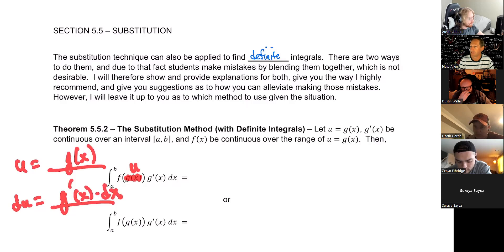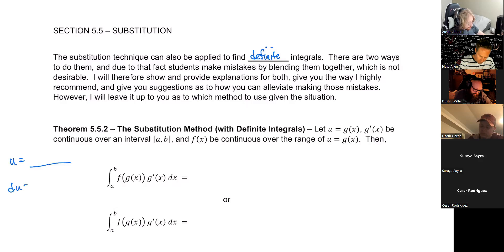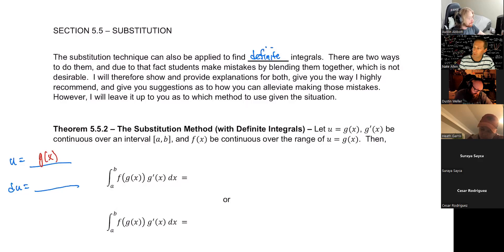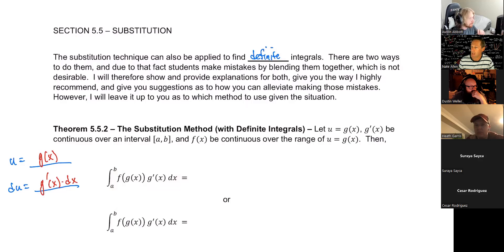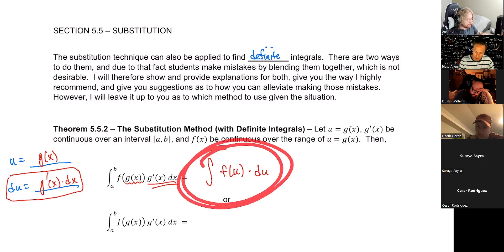This is what I always do on every single one of these — I write the U substitution off to the side. If we let U equal G of X, as Austin said, and we take the derivative and multiply over that DX, do you see what we get to replace this with to look a lot simpler? F of U times — what is all of this? It's just dU.